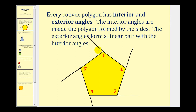Looking at angle one, angle six forms a linear pair with angle one and therefore is an exterior angle. Similarly, we'd have angle seven, angle eight, angle nine, and angle ten. Each of the blue angles forms a linear pair with the red interior angles.